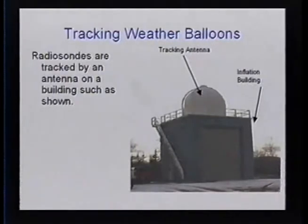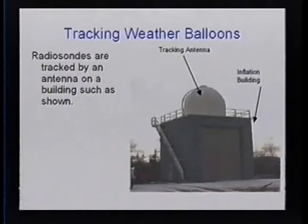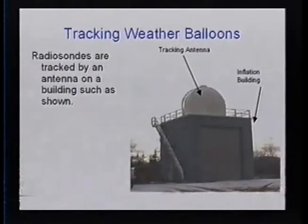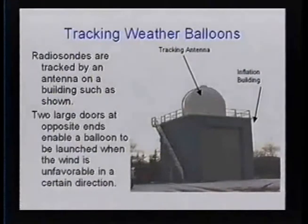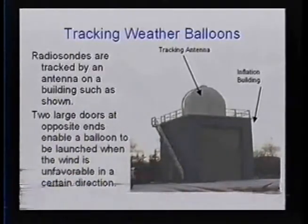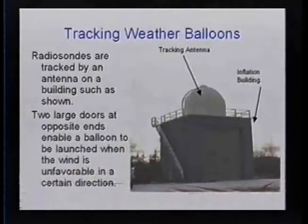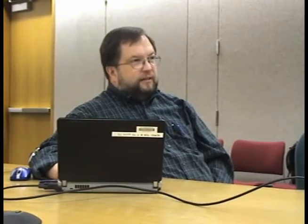I talked about there being a transmitter in the radiosonde that sends the data, but that signal has got to be collected. Each of those 14 sites has a tracking antenna sitting atop what we call an inflation building. The inflation building is where the balloon is inflated and the entire radiosonde and parachute is assembled. The antenna on top receives the signal from the radiosonde as it goes up into the atmosphere. There's one large door that opens to release the balloon, but when winds are really strong, there's a door on the opposite side—you don't want the balloon or the radiosonde hitting any objects on its way up.